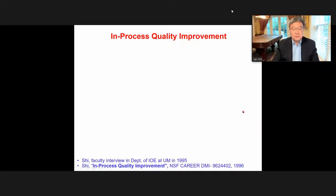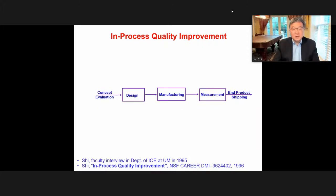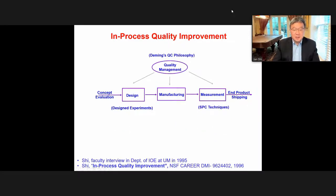What is in-process quality improvements? This is a concept I proposed in 1995 when I first interviewed for a faculty job in industrial engineering. My background was in automation — bachelor's, master's, and almost PhD in China, then a PhD in manufacturing at the University of Michigan. Thinking about what I could contribute to IE with a focus on quality, I developed this concept. The manufacturing process goes from design to manufacturing system to operation to product, and then we check quality and ship to the customer.